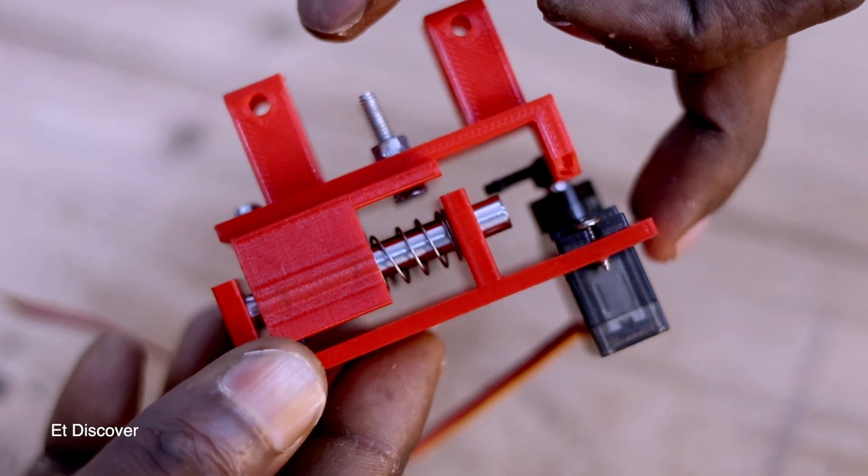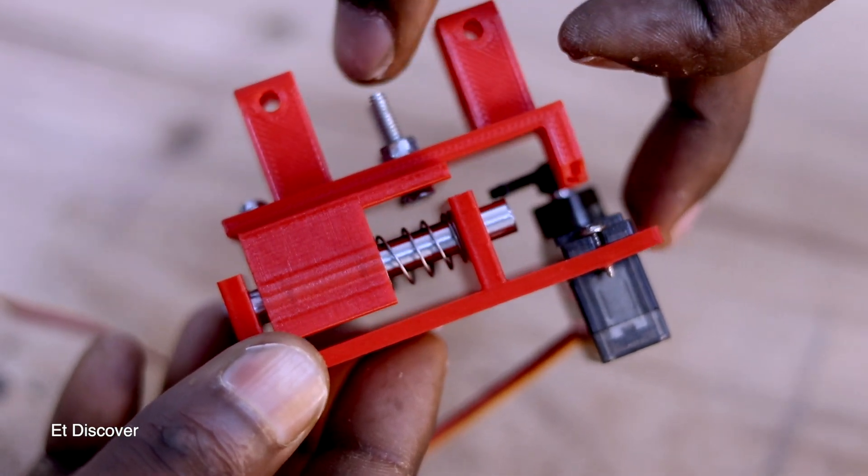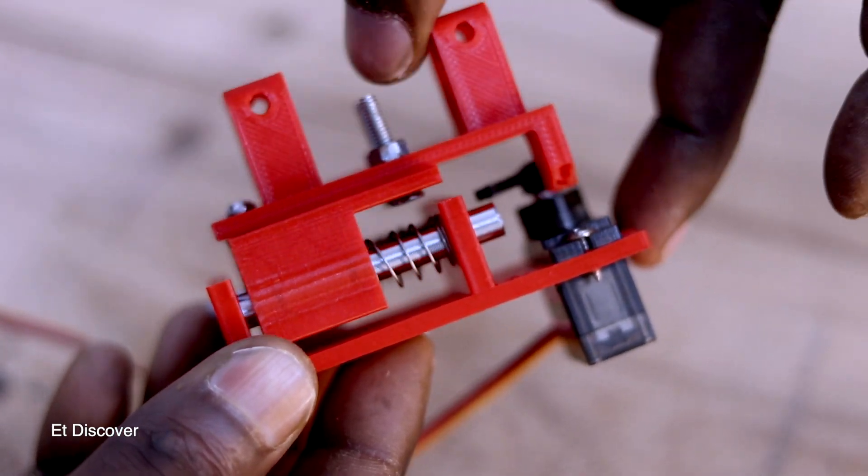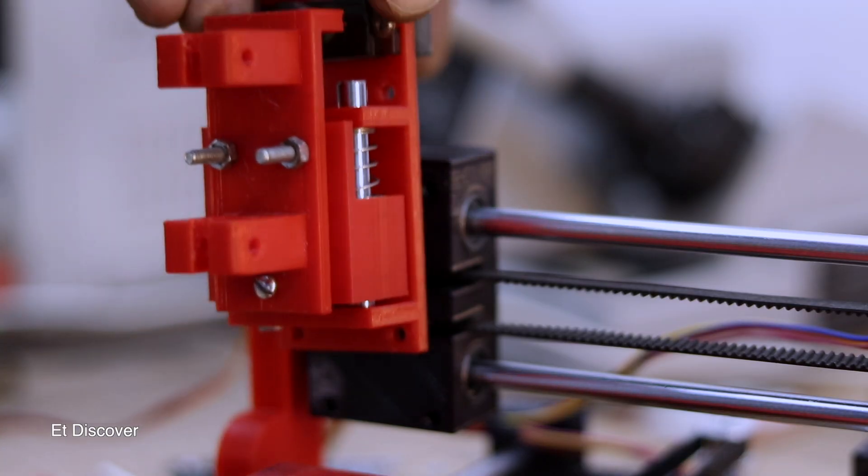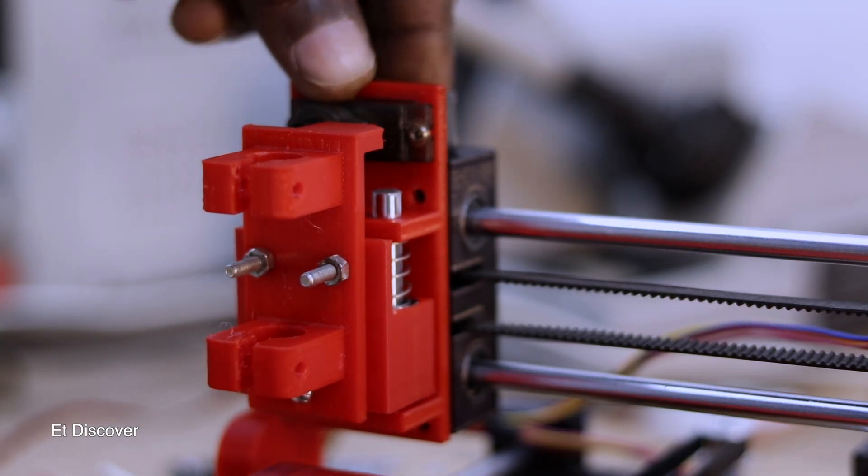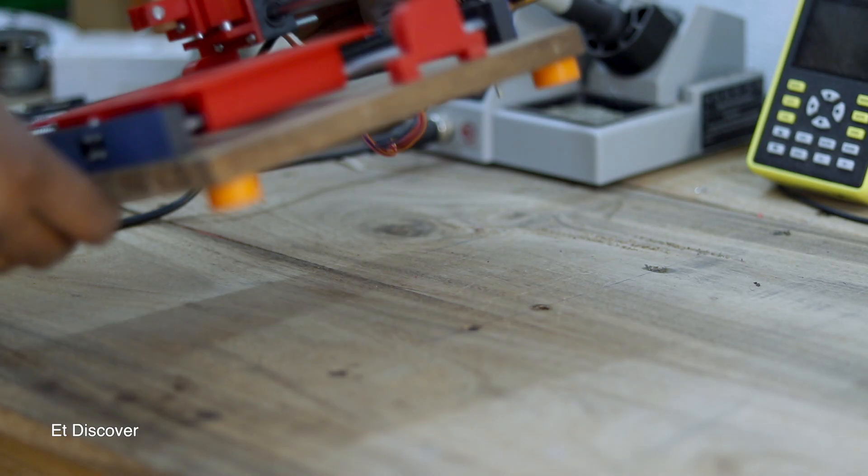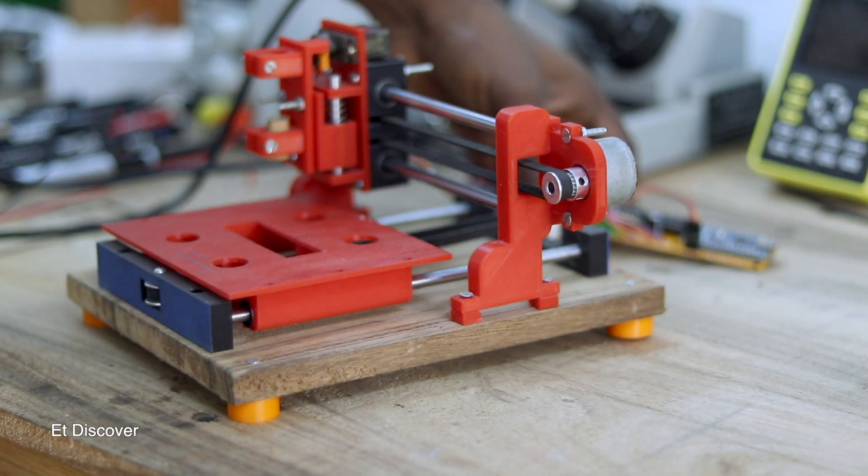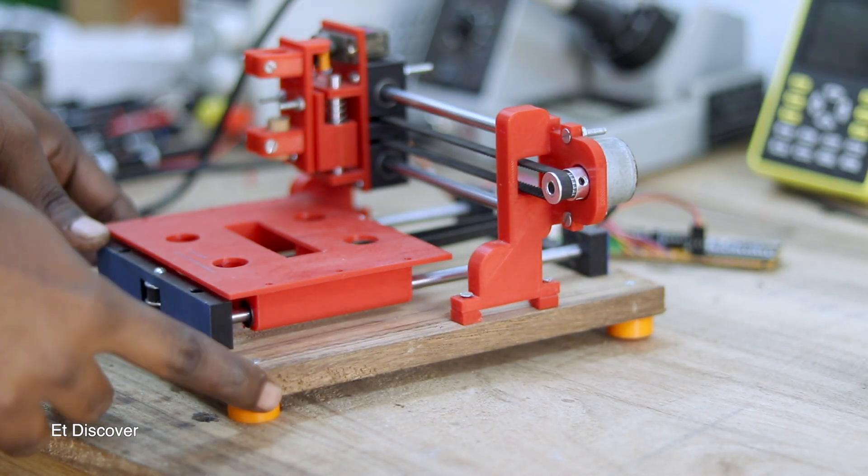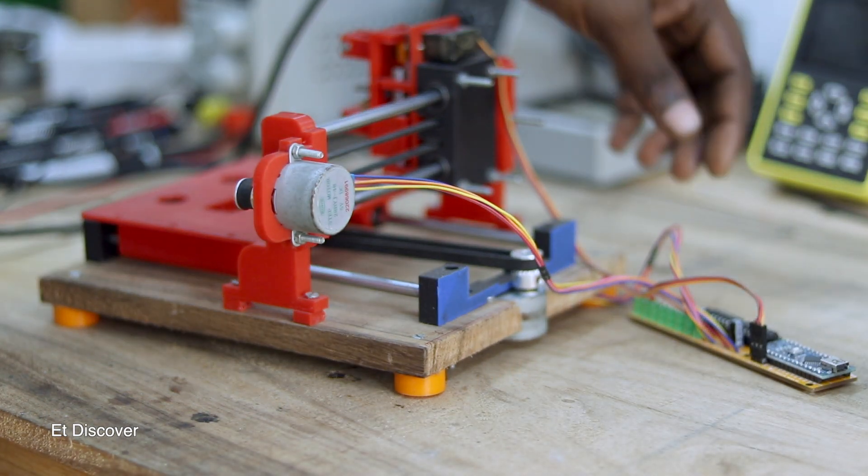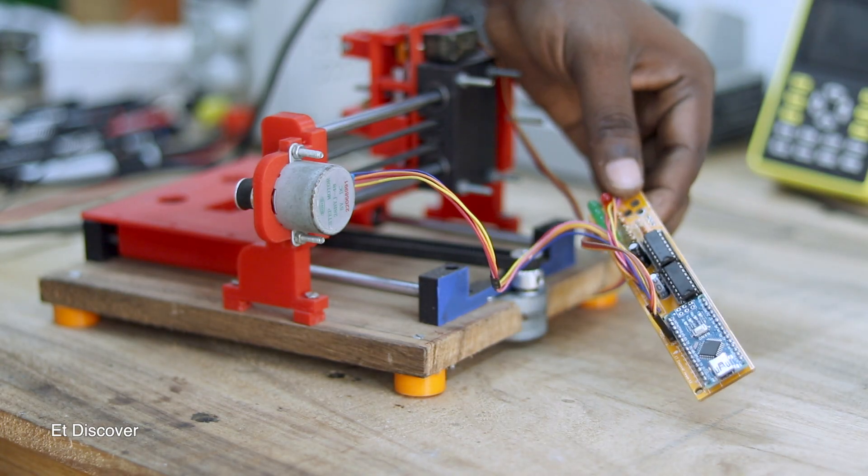Okay, finally this is my upgraded Z-axis. You can see it's working very well, right? But now one thing is left: I need to set this Z-axis on my CNC. This is the full and final updated setup of my CNC. Let's check if the problem is solved or not.